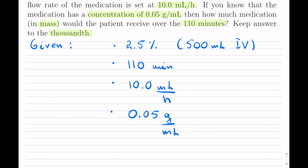Next we know that we are running this for 110 minutes. And we know that the flow rate for the medication is 10 milliliters per hour. I already noticed there's a problem because I have minutes and hours, but that's okay. We can change the minutes to hours shortly. I am told that each milliliter, we have 0.05 grams per milliliter. That is actually the concentration inside of that.